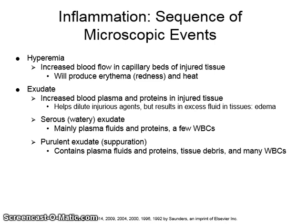The lining of the walls of the blood vessels become sticky and are lined by white blood cells — this is called pavementing. After pavementing vessel walls, the white blood cells begin to escape. This process is called emigration. Those white blood cells are primarily neutrophils.